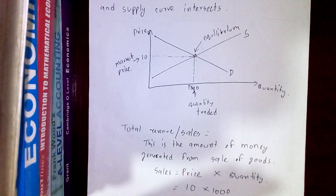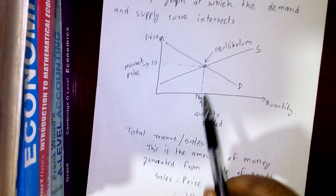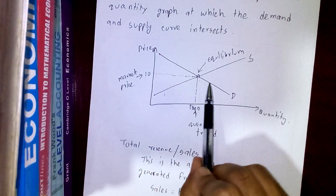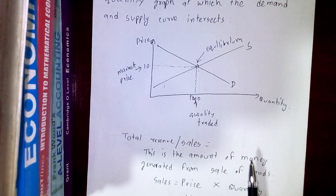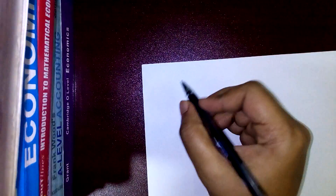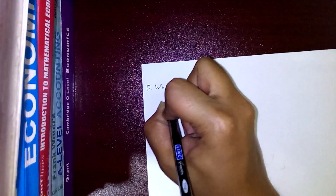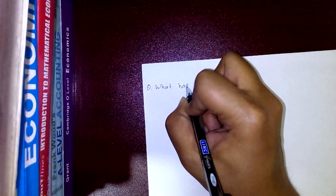In this case, the price of the product is 10 and the quantity traded at that price is 1000, so total sales will be 10,000. Sales revenue shows how much money we will generate by selling a certain amount of goods. Price is the market price and the quantity traded is used to calculate sales revenue.